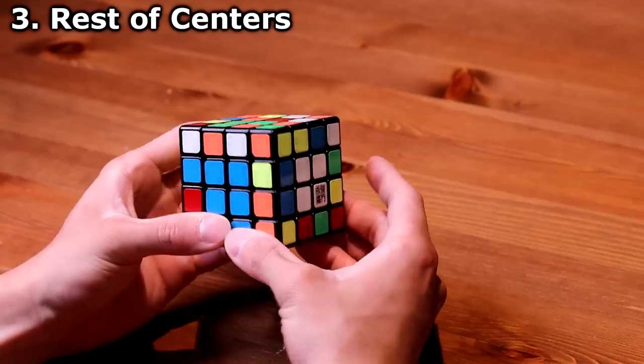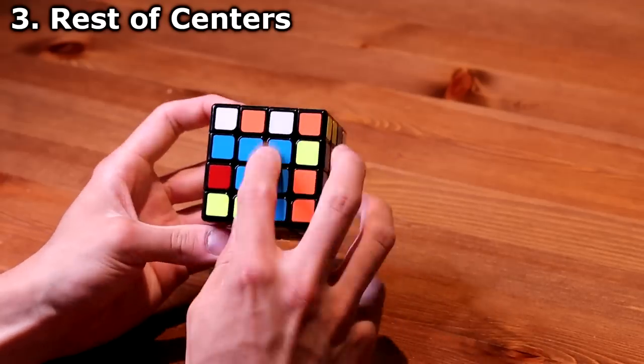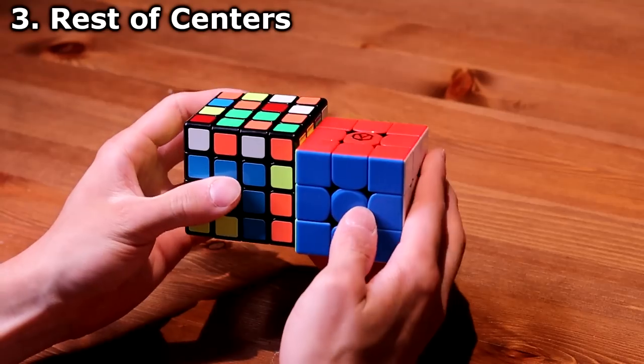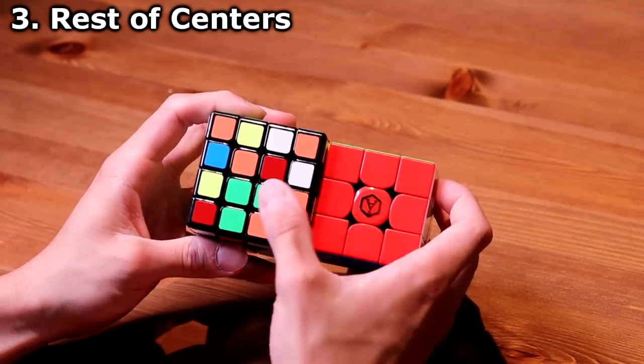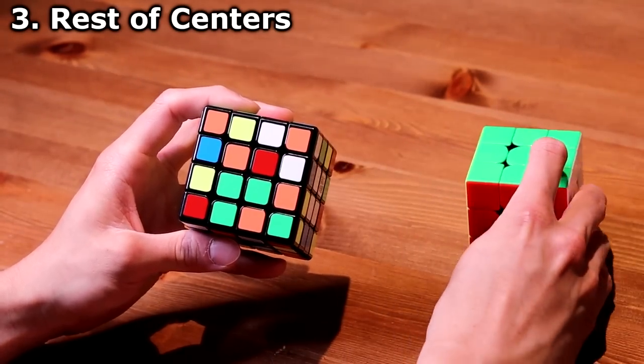So I can simply turn it and connect it. White and yellow is still intact, and blue center is solved. Now from the 3x3, I can see that red is on top, right on top of the blue center.